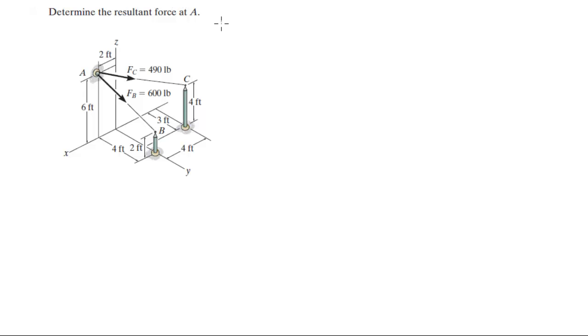So first you need to find all the points involved. You got the position of A which sits at 2i plus 0j plus 6k.